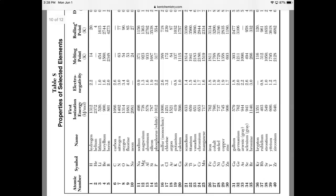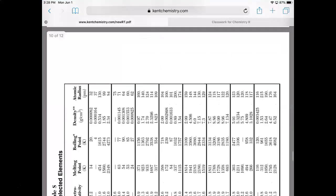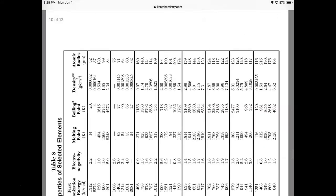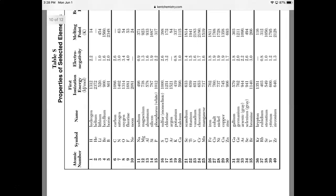You can do the same thing for the ionization and the electronegativity. If the question is about down a group, again you would just pick any group on the periodic table. I like to pick group 2, it has Be and Mg at the top. If you go to table S, Be's ionization energy is 900 and Mg's is 738.